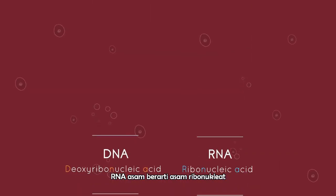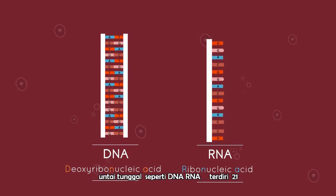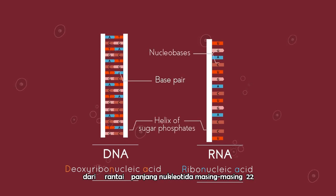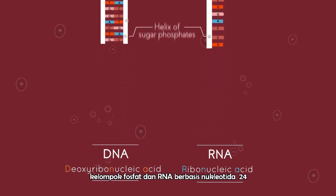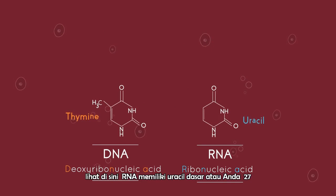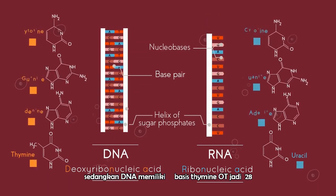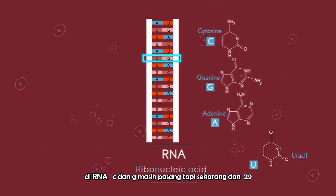DNA stands for deoxyribonucleic acid, while RNA stands for ribonucleic acid. Whereas DNA is double-stranded, RNA is single-stranded. Like DNA, RNA is made up of a long chain of nucleotides — each nucleotide consists of a ribose sugar, a phosphate group, and a nucleotide base. RNA has a sugar called ribose, whereas DNA has a sugar called deoxyribose. RNA also has the base uracil (U), whereas DNA has the base thymine (T). In RNA, C and G still pair, but uracil replaces thymine as a new pair to know.